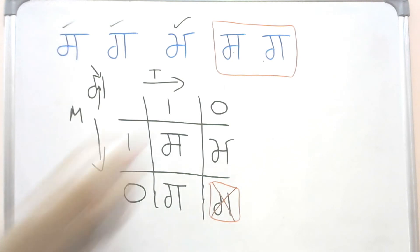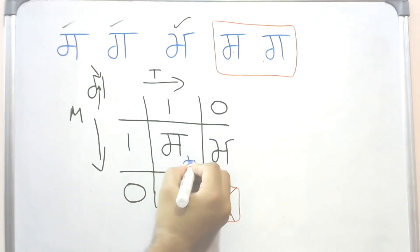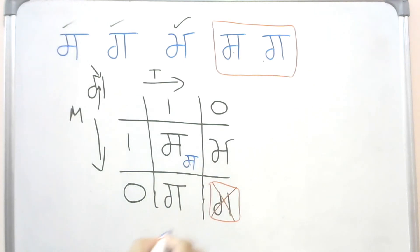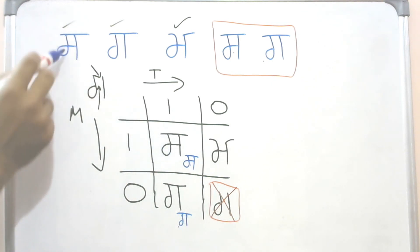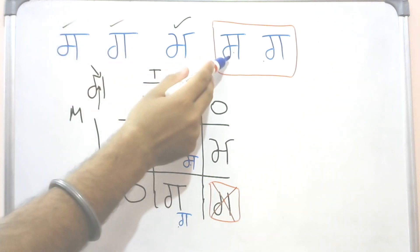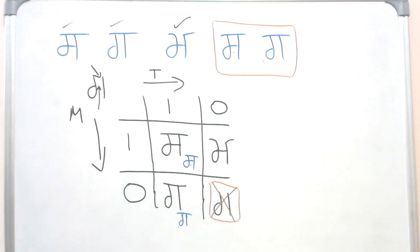The same logic applies to the Pairbindi forms. Just remember: this is Sassa, this is Shasha, this is Gagga. Please let me know in the comment section if you have any doubts. Wahei Guru Ji ka Khalsa, Wahei Guru Ji ki Fateh.